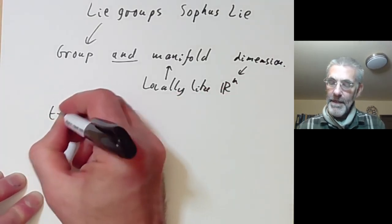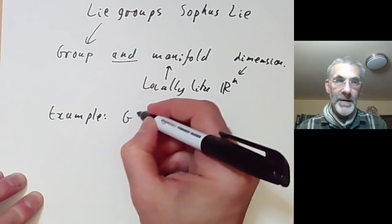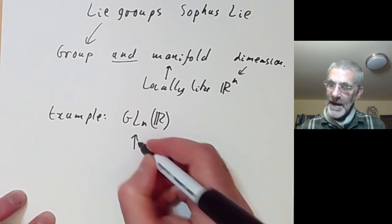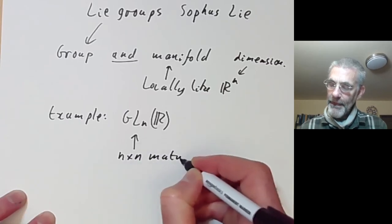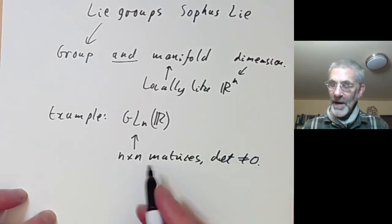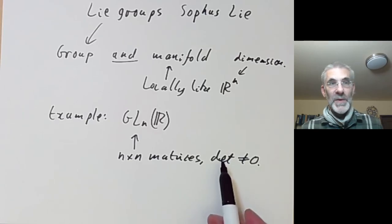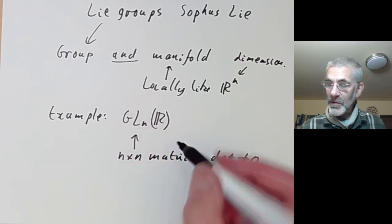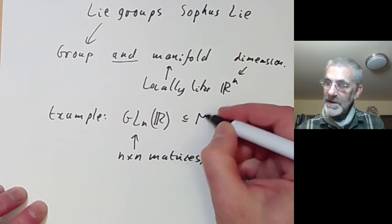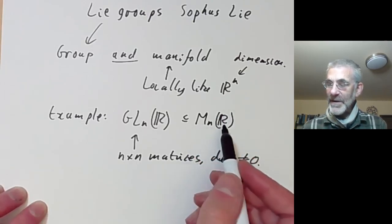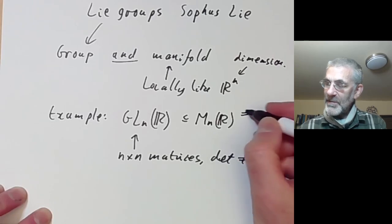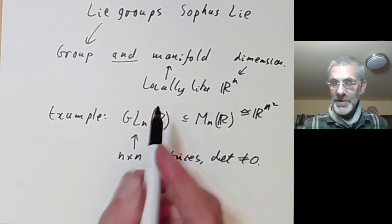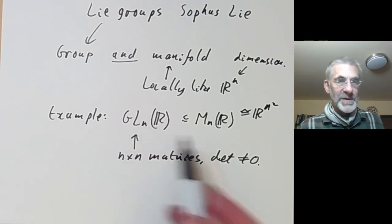A typical example might be the group GL_n over the reals. GL_n means n×n matrices with determinant non-zero. If a matrix has non-zero determinant it has an inverse, and the product of two matrices with non-zero determinant has non-zero determinant. So this certainly forms a group, and it's also a manifold because it's an open subset of n×n matrices over the reals, isomorphic to R^(n²). So GL_n(R) looks locally like R^(n²), and the group operation is continuous and smooth.